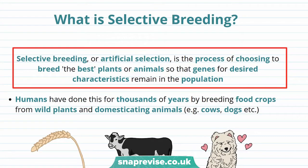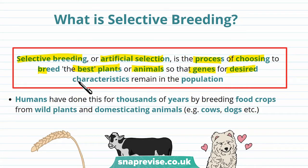We know that natural selection is a very slow and gradual process taking many generations. However, we can speed up natural selection through selective breeding. Selective breeding, or artificial selection, is a process of choosing to breed the best plants or animals so that genes for desired characteristics remain in the population. This means that individuals with the desired characteristics are bred to produce offspring that share this characteristic.